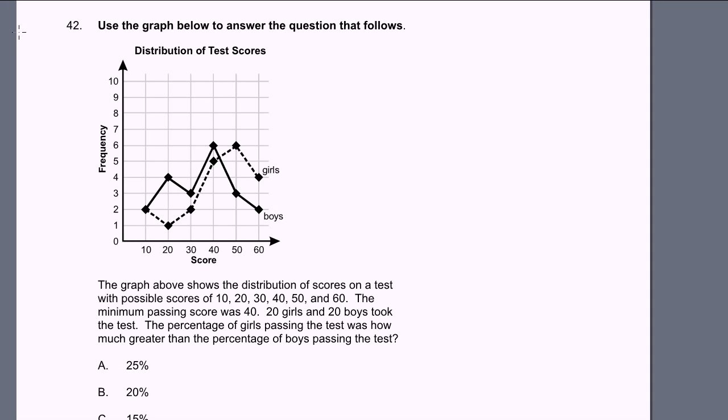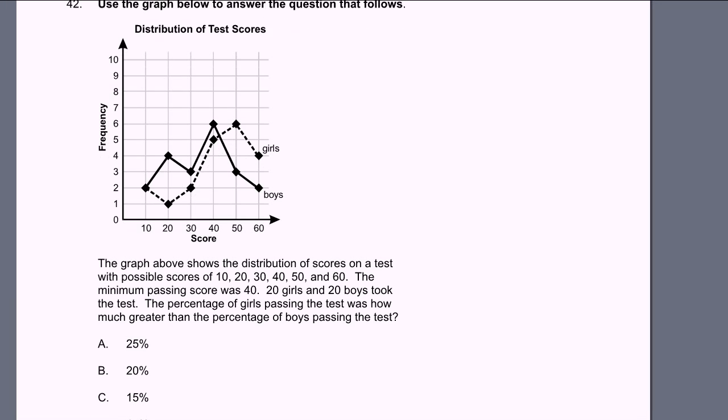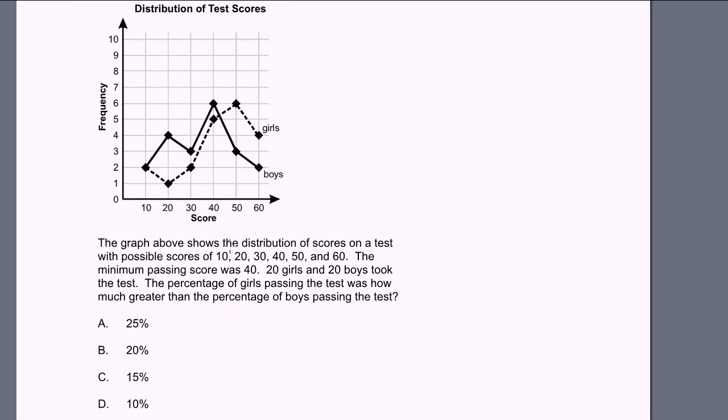Problem 42. Use the graph below to answer the question that follows. Distribution of test scores. The graph above shows the distribution of scores on a test with possible scores of 10, 20, 30, 40, 50, and 60. The minimum passing score was 40. 20 girls and 20 boys took the test. The percentage of girls passing the test was how much greater than the percentage of boys passing the test?